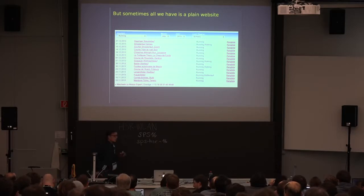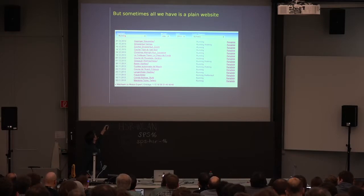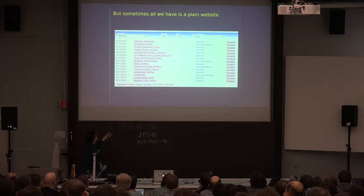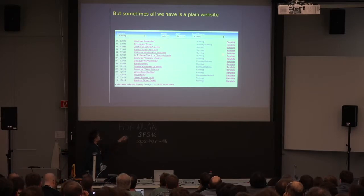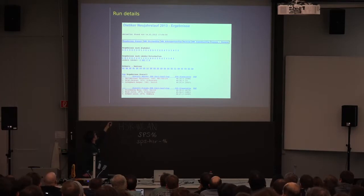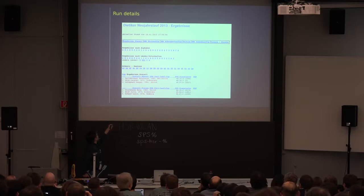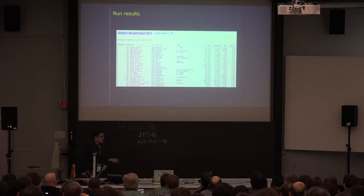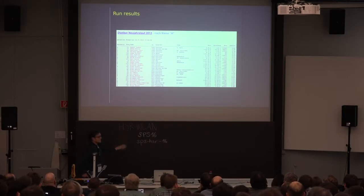The example I'll go through is from a running site that has a basic filter — the kind of sport, the month, the year, the region — and then you choose run results based on your interest. You then need to page through these run results. For each run you get a results page, ordered alphabetically by runner name. After choosing such a page you get to the run results, which include a category, rank, name, team name, time, pace, and more — a lot of data.